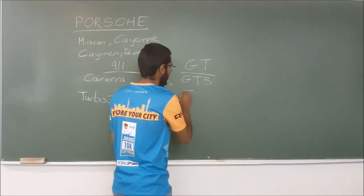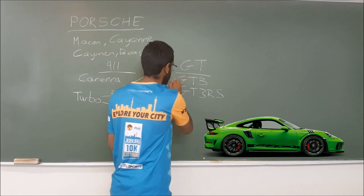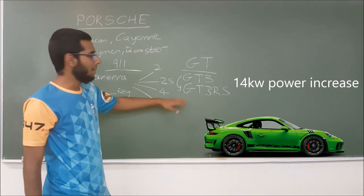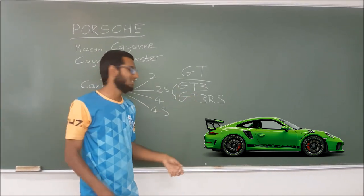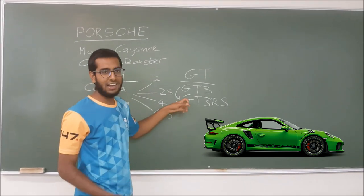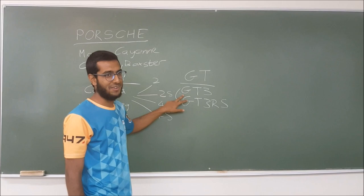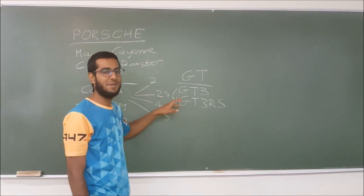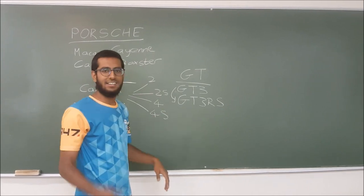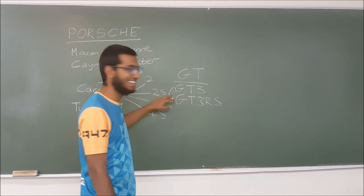Then we got the GT3 RS which is basically based on the GT3. It's a similar engine, slightly more power, but you got more aero at the back. So it's really made for the track. This particular car only comes in the PDK. The new GT3 you can get in the manual, so it's really nice. I prefer taking a manual GT3 over GT3 RS. But you can start, I'll start a GoFundMe page and you can start funding me for that.